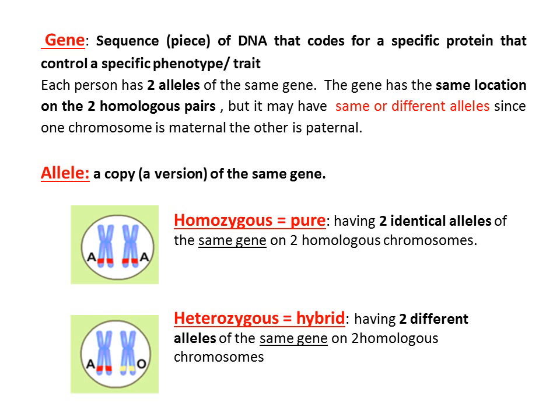The position of the gene is the same on both homologous chromosomes. If I inherited a chromosome carrying allele A maternal and another carrying allele A paternal, my two alleles are the same — so I am homozygous or pure. However, if one allele is A while the other is O, I am heterozygous or hybrid.